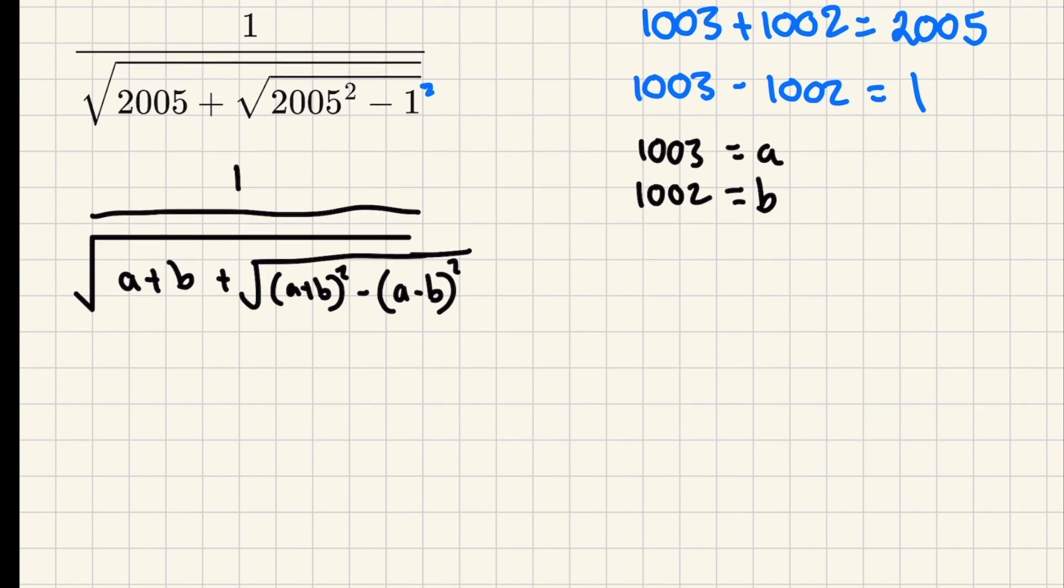Now once you make this step, the whole problem really starts to unravel and become easier. But it's all about spotting this first step. Anyway, let's show what this is. So if you want to know, this is another algebraic identity, much like the difference of two squares or something like that. It's just one of these things that you should know.